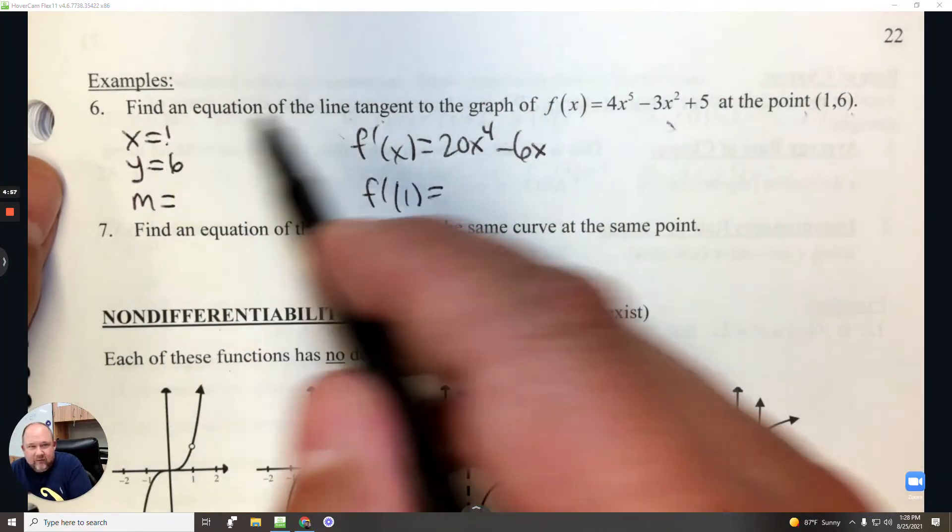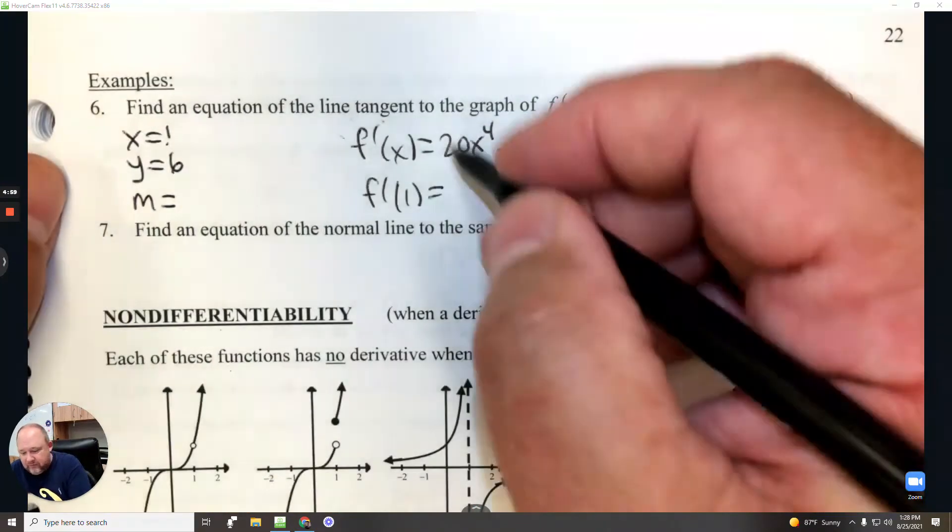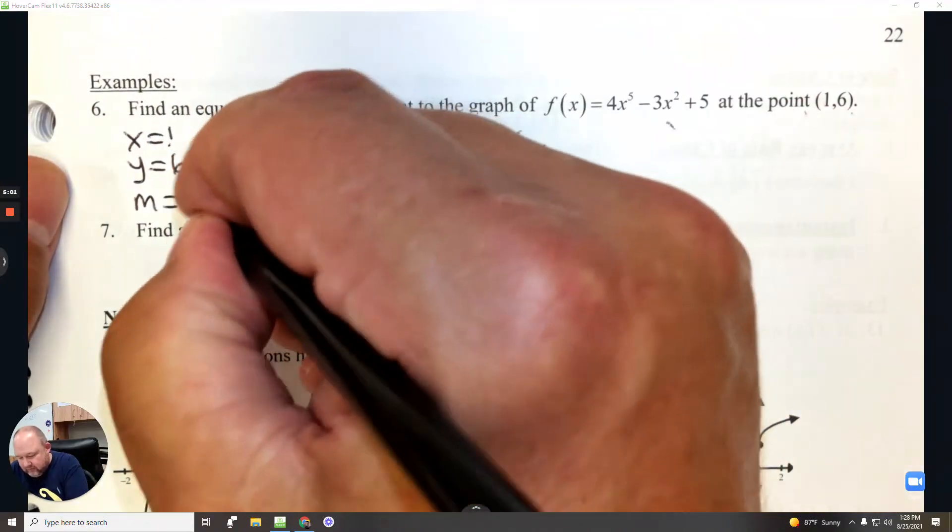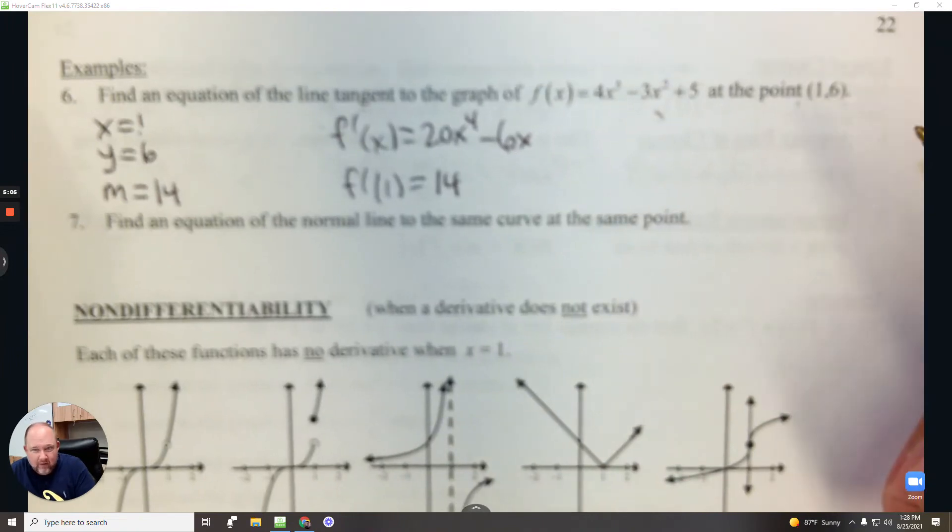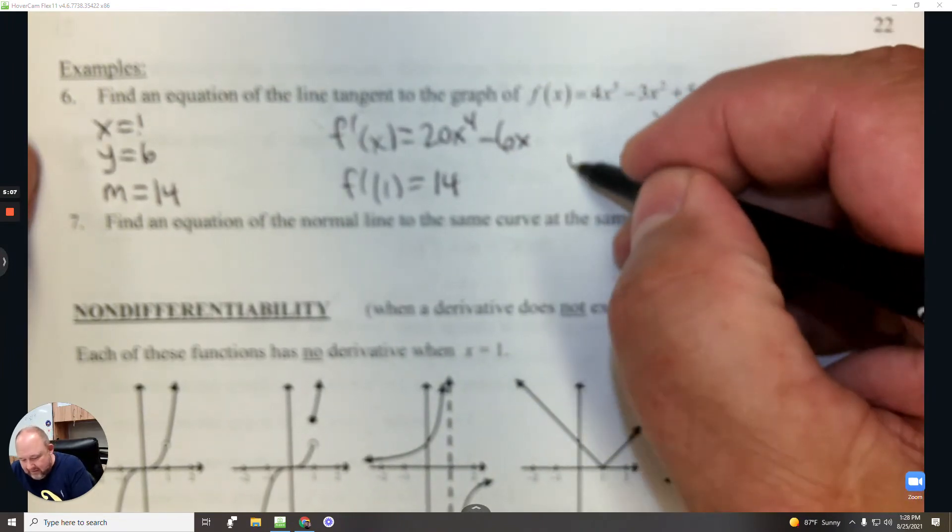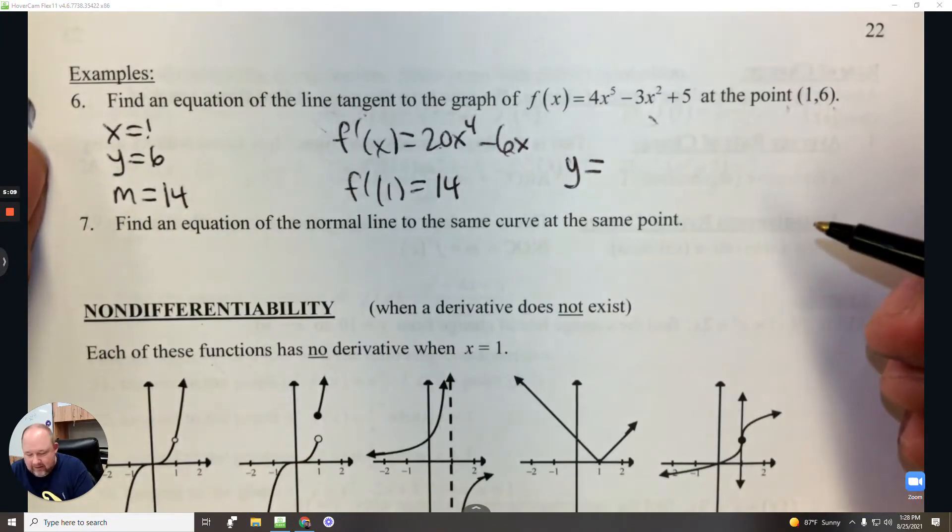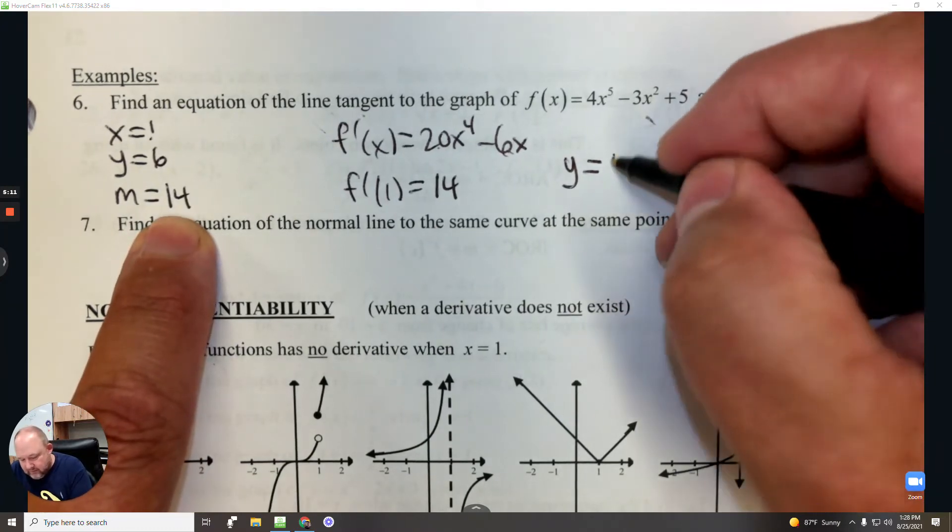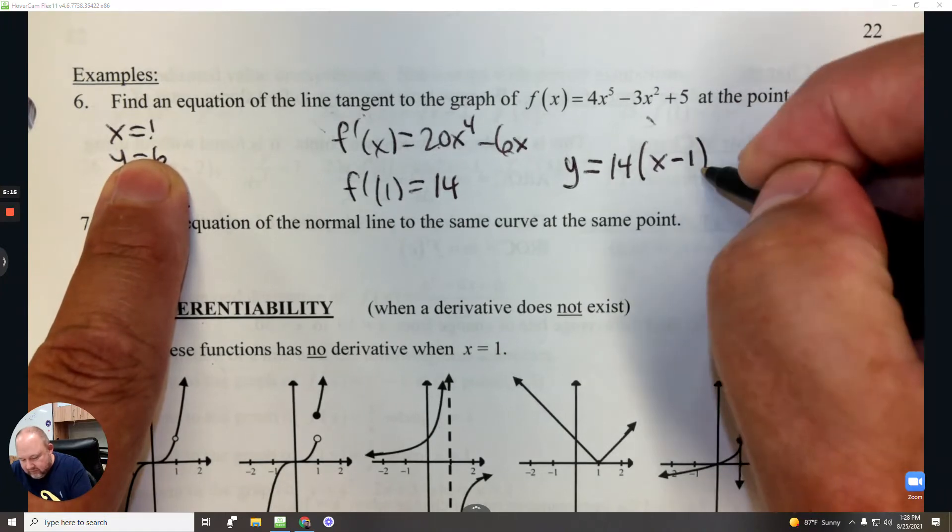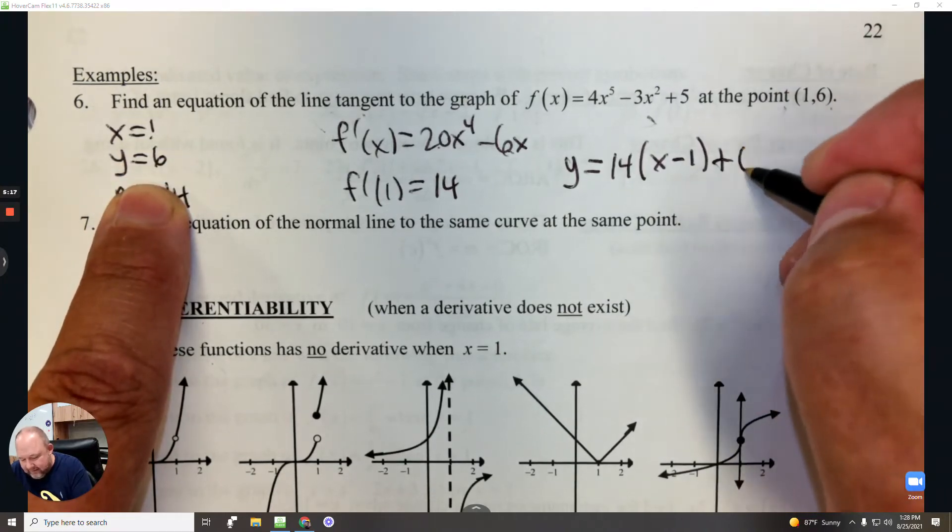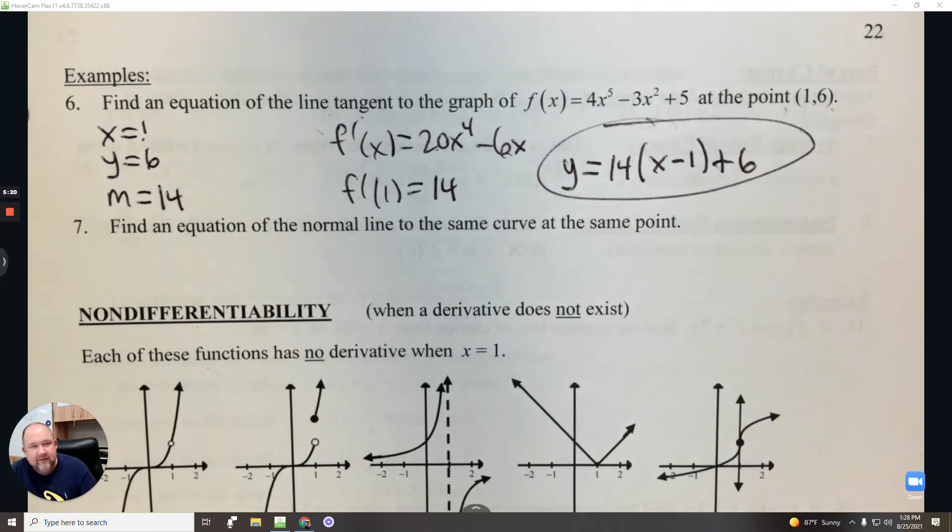So I only plug in the x value into here and you're left with 20 take away 6, which is 14. Now these are the numbers we're going to use to write the equation of the line. So in HK form it would be y equals the slope, which is 14, the x value change the sign, and then the y value stays the same. Done.